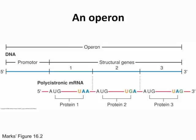An operon is a part on the DNA that has structural genes which code for proteins. Starting from the top of the picture, you have a DNA strand, and a section of that is the operon. Every operon has a promoter, which is where RNA polymerase will bind and make your mRNA strand. The mRNA then goes through translation to make your protein.